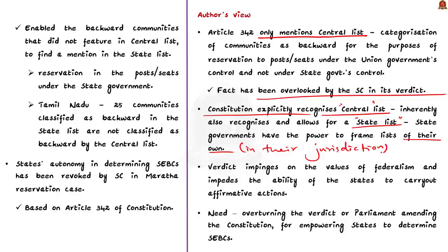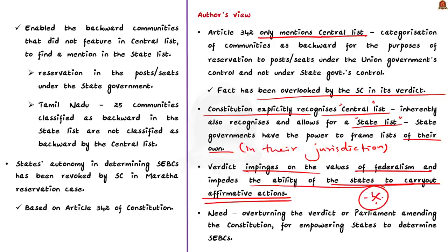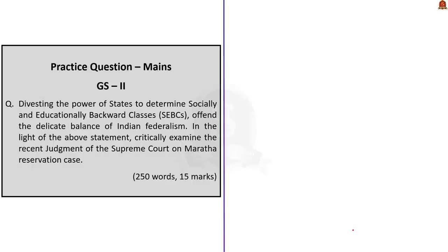The judgment also impedes the ability of states to carry out affirmative actions of reservation for the benefit of disadvantaged sections of population. The union government has filed a petition to review the judgment, and if this does not materialize, Parliament can amend the Constitution to constitutionally grant states the power to determine socially and educationally backward classes.